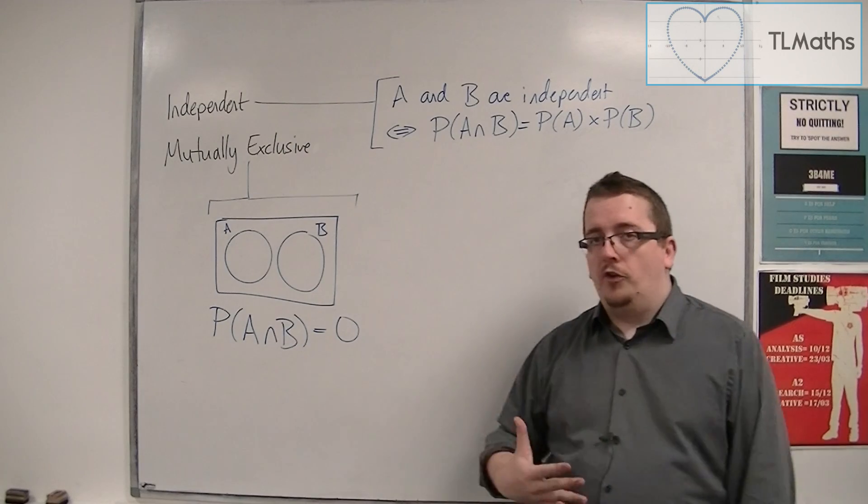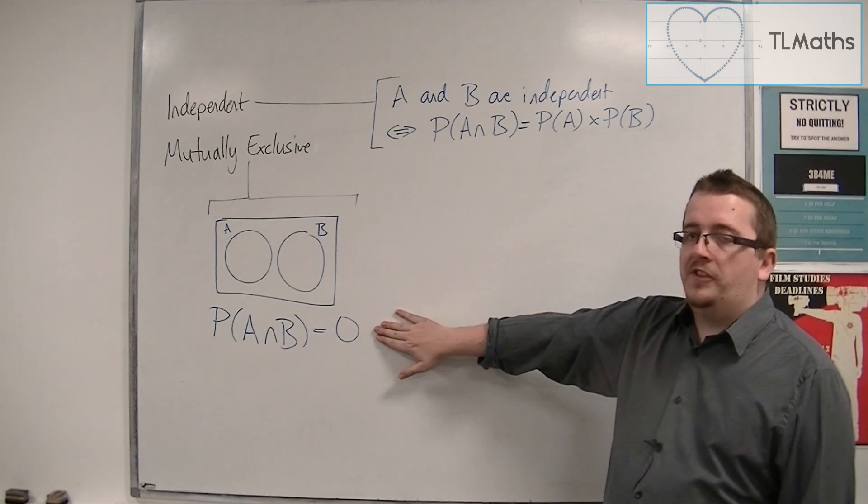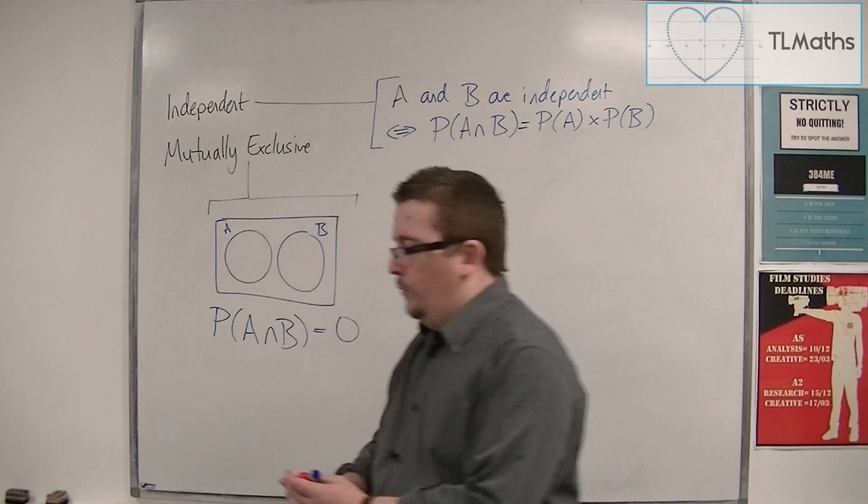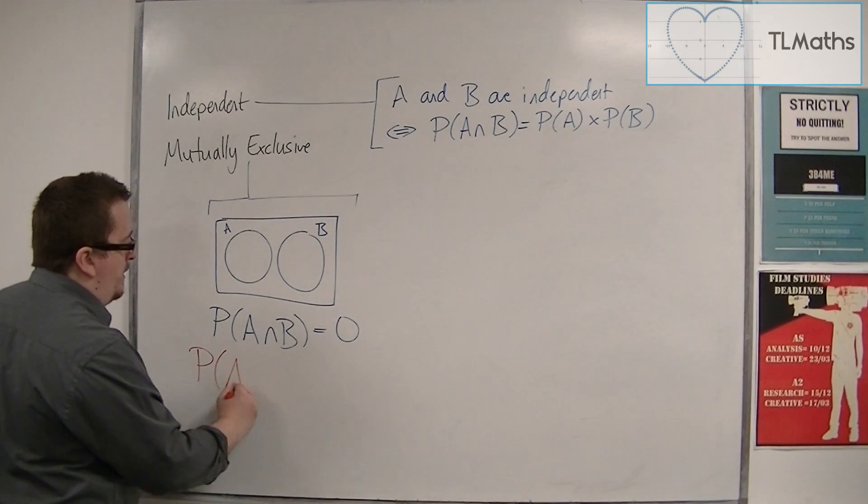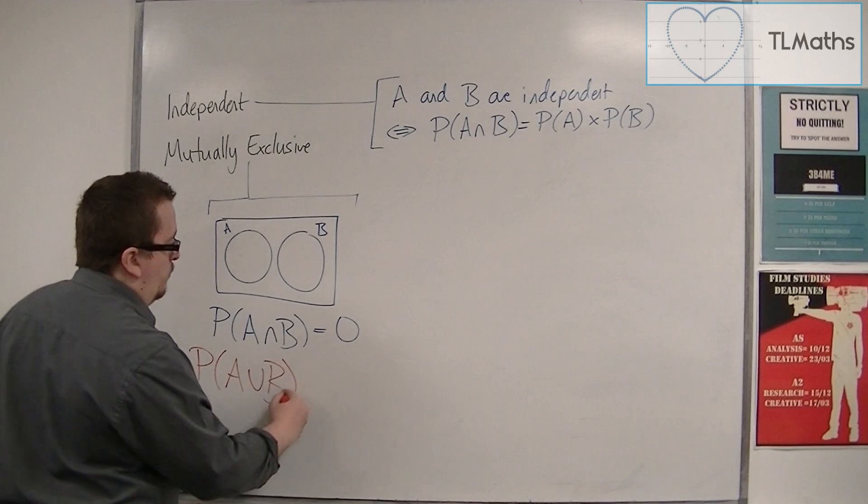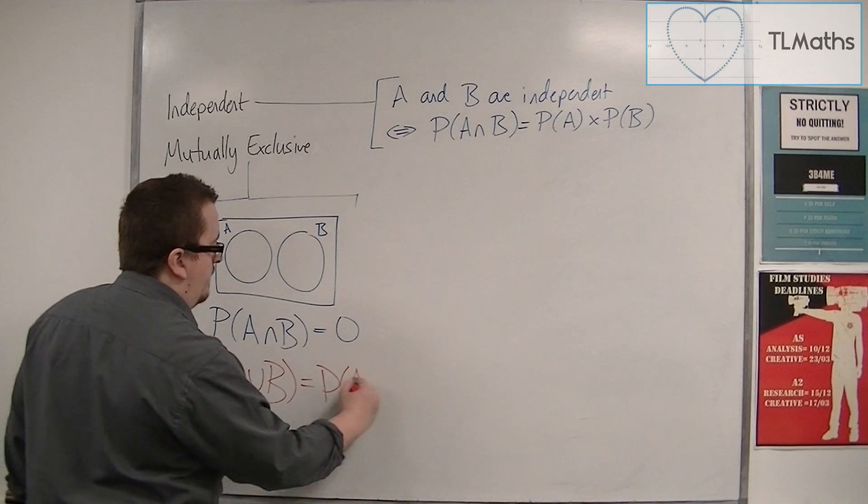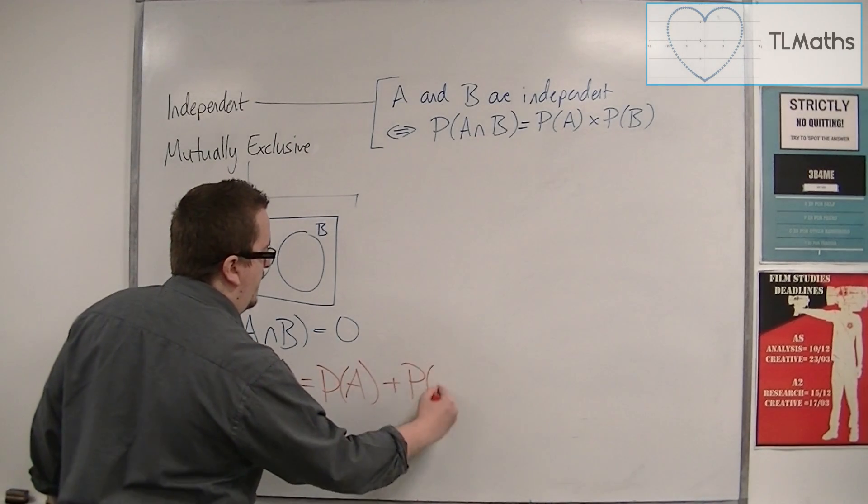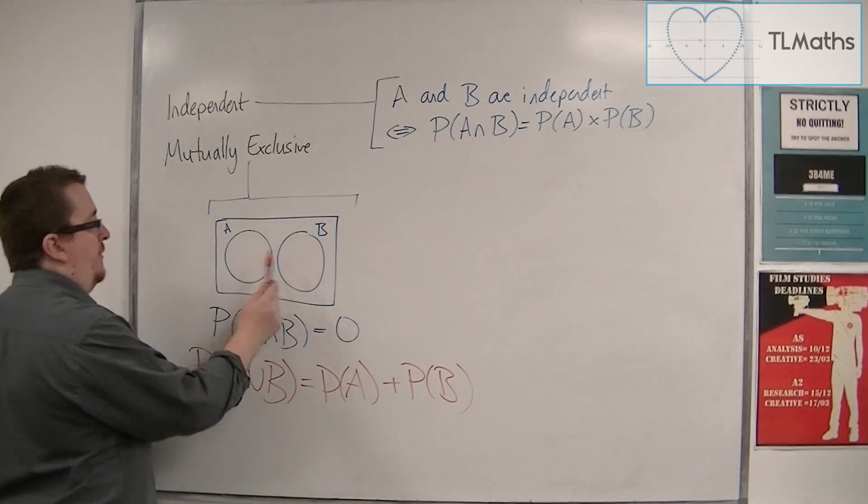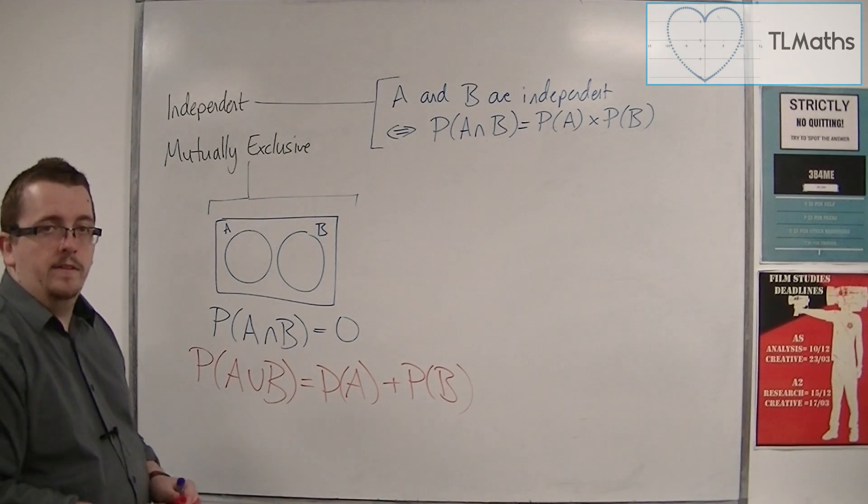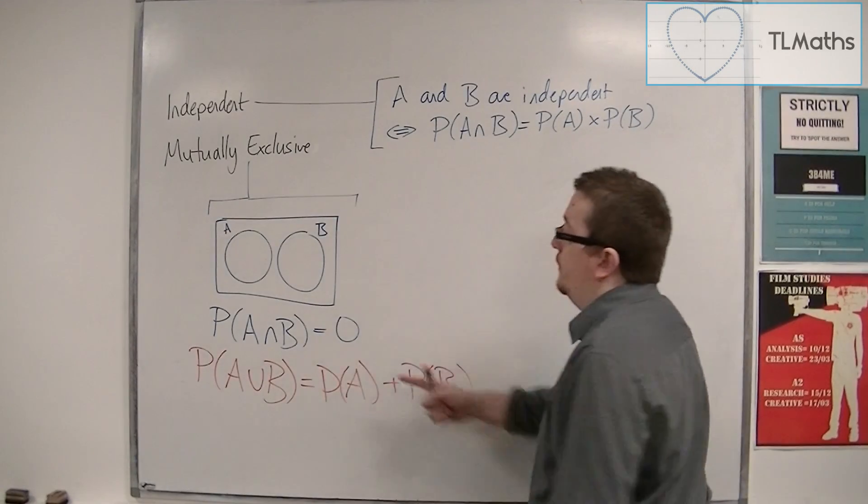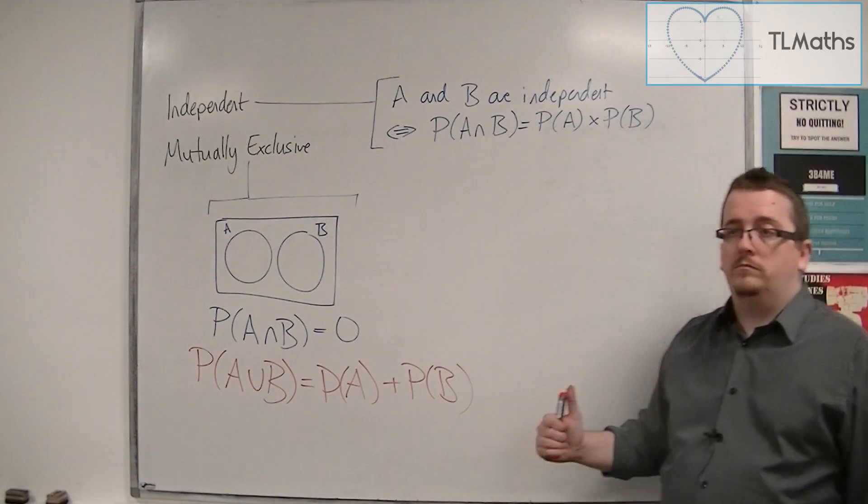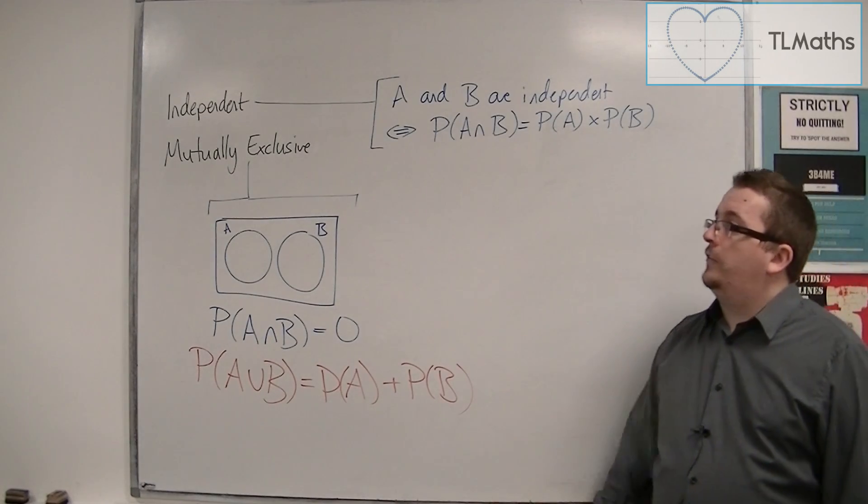Subsequently, from this, because the property of A intersection B is 0, we can go back to that formula that we wrote down and say, well, that means that the property of A union B will just be equal to the property of A plus the property of B. So it's just those two properties added together. There's no subtract an intersection because the intersection is 0. And that's the difference.